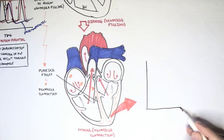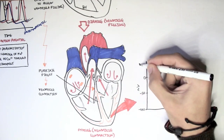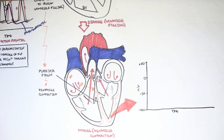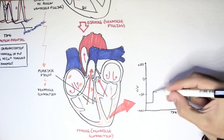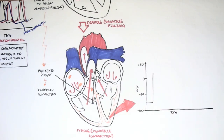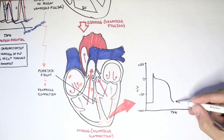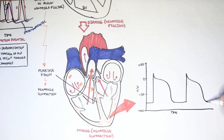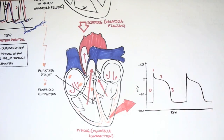Here we have the graph again, with membrane potential on the y-axis and time on the x-axis. The changes in membrane potential of the ventricle muscle cells — at rest, the membrane sits at about negative 80 mV. When the muscles contract, they go up to about positive 20 mV. Unlike the sinoatrial node with phases 0, 3, and 4, the ventricles have phases 0, 1, 2, 3, and 4, because of the plateau phase, which we will talk about soon.